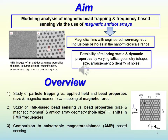The idea of exploiting magnetic antidot arrays derives from the possibility of using them not only as high-frequency magnetic sensors with properties tunable by varying lattice geometry, but also as traps for magnetic particles and bits. In this framework, we investigate the mechanism of particle trapping by calculating the magnetic force produced by the antidot array on the particles themselves.